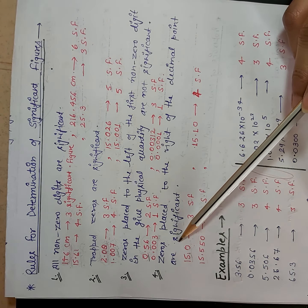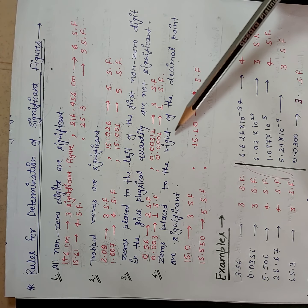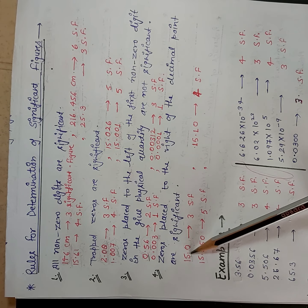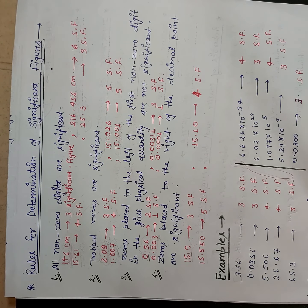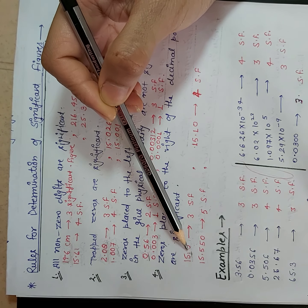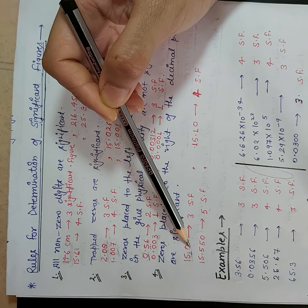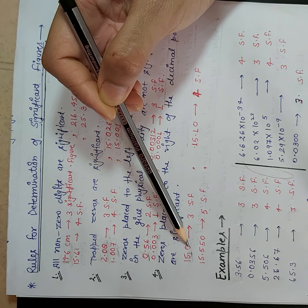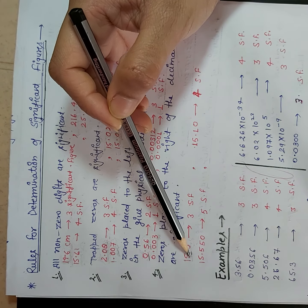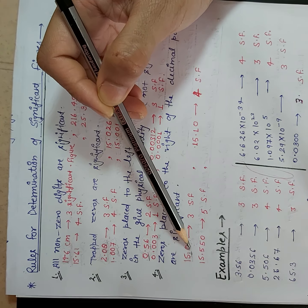Our fourth rule is: zeros placed to the right of the decimal point are always significant. Take an example — 15.0. This zero is present to the right of the decimal point, so it will be considered as significant. One and five, both are non-zero digits, and this zero is present to the right of the decimal point so it will also be considered as a significant figure. So in totality we can say that in this number there are three significant figures.